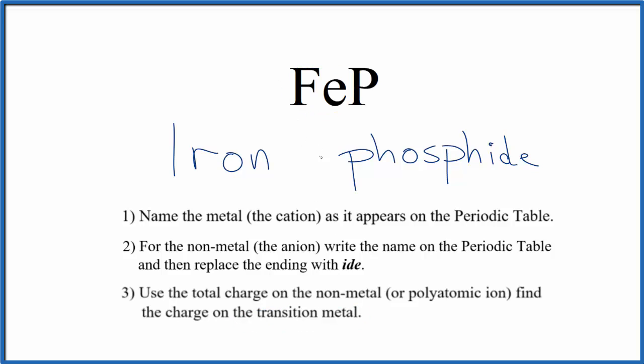So when we have a transition metal, we need to write the charge on the iron in between these names. Phosphorus, that's three minus, it's always three minus. So for these charges to add up to zero, iron has to be three plus. So we'll put parentheses and a Roman numeral three between these names here.